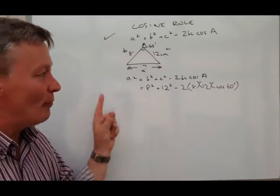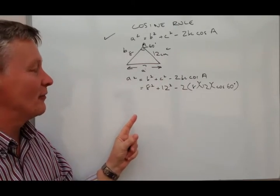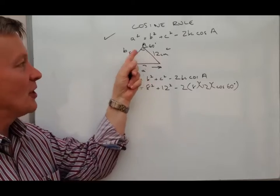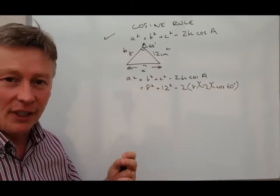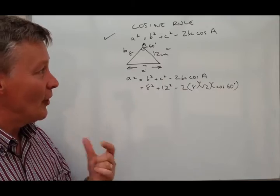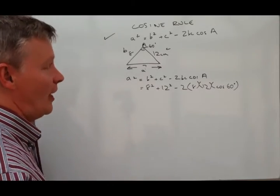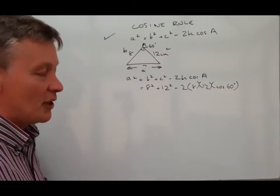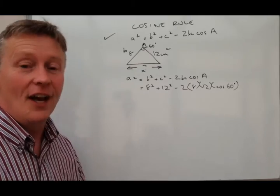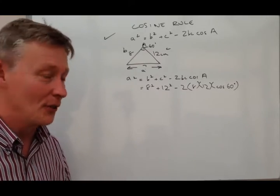So that's the most common application of the cosine rule where you're given two sides and the angle in the middle of those two sides. Now the other way of an application of this is where you're actually given three sides and you're asked to work out an angle.